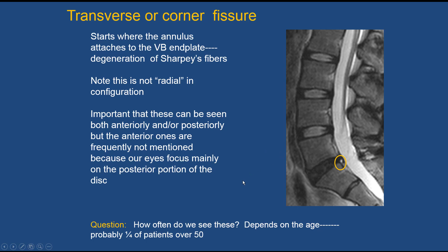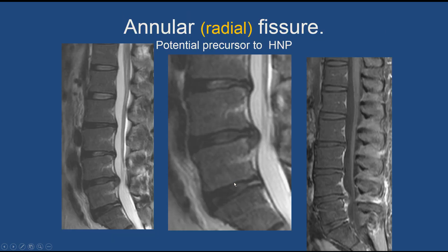How often do we see these corner fissures? Probably about 25% of patients over 50 years of age will show either a corner fissure or a concentric fissure. The important one is the radial fissure — you can see here how it goes through the entire width from inner to outer layers, providing an egress for nuclear material to herniate through. On this post-contrast study, there is enhancement around the radial fissure. It has been proposed that when enhancement is seen around a radial fissure, those patients are the ones with pain associated with the fissure; no enhancement suggests it may not be an active fissure.